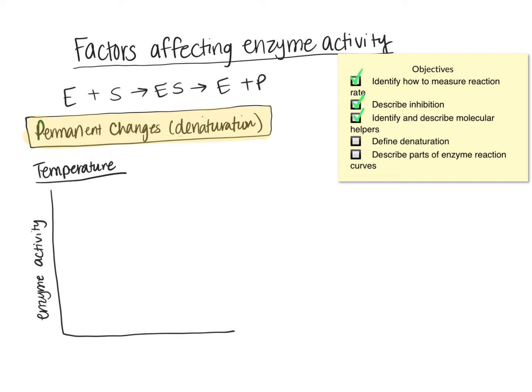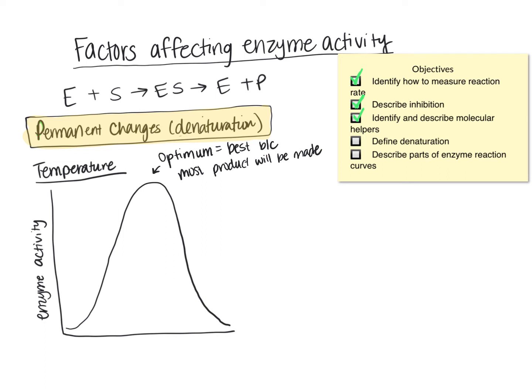In looking at this graph, we have enzyme activity as the dependent variable — specifically, we're measuring the amount of product being produced. At the beginning of the graph, we'd expect very little to no product, and we'd expect it to increase over time. Here at the top of the graph, this is where the most product is being made. We call this the optimum temperature. At that optimum temperature, the enzyme is producing the maximum possible amount of product.